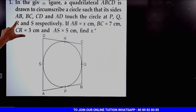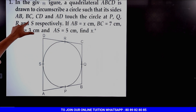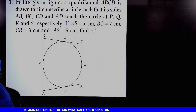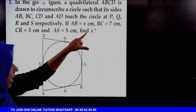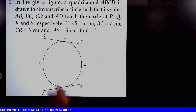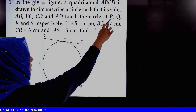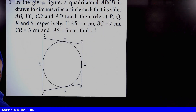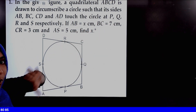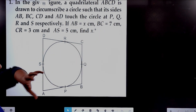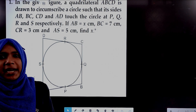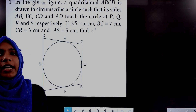Such that its sides AB, BC, CD and AD touch the circle at P, Q, R and S respectively. That is, AB touches the circle — so these are the points of contact.